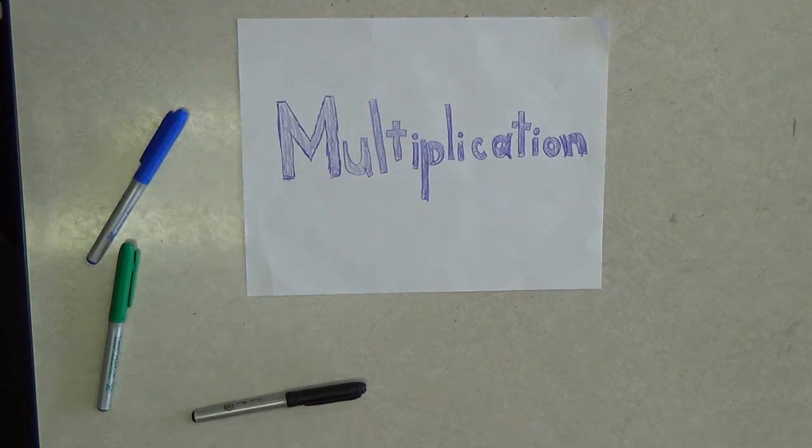Multiplication of mixed numbers. In the previous video you saw how to model multiplication of mixed numbers using a rectangular array. And we multiplied the problem 3 and 1 half times 4 and 3 fourths.